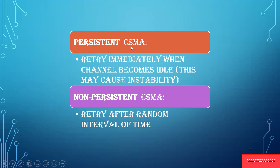Under persistent CSMA, it retries immediately when the channel becomes idle. If the channel is idle, it will retry to send the data again and again, so there will obviously be instability. Non-persistent CSMA transfers the data at a random interval of time.